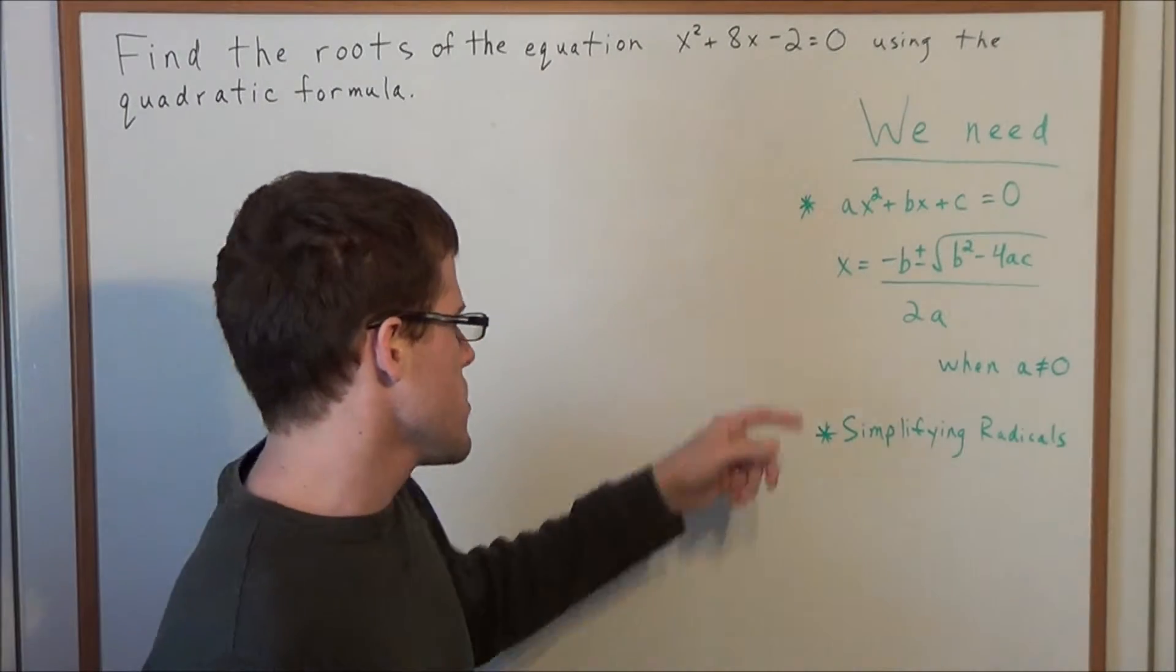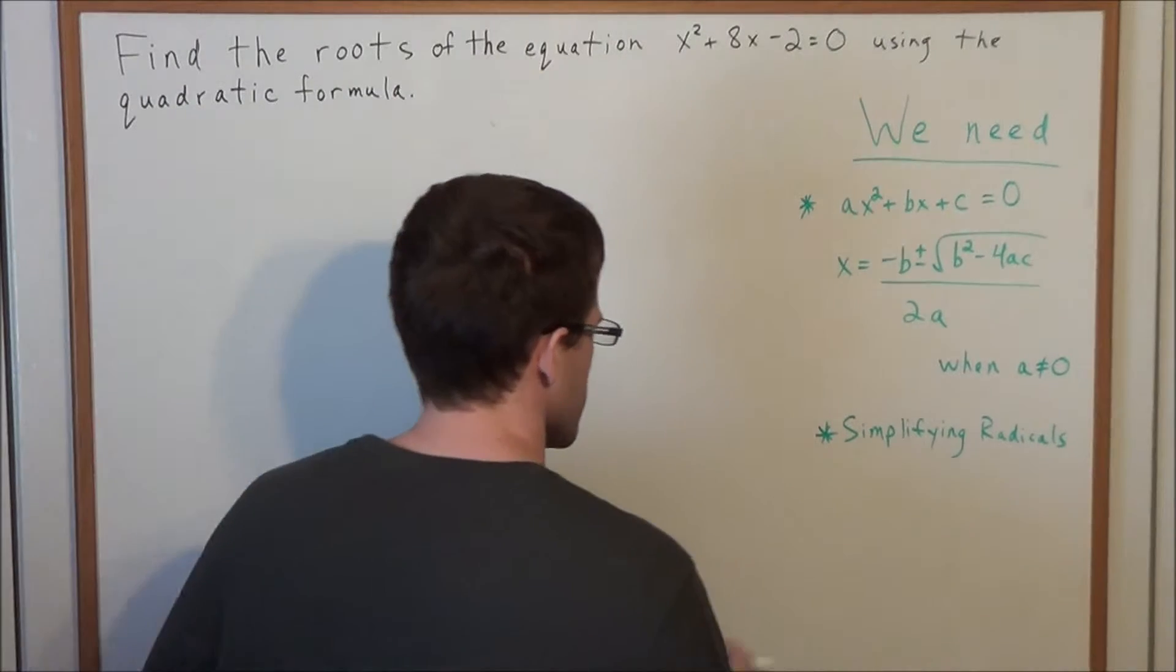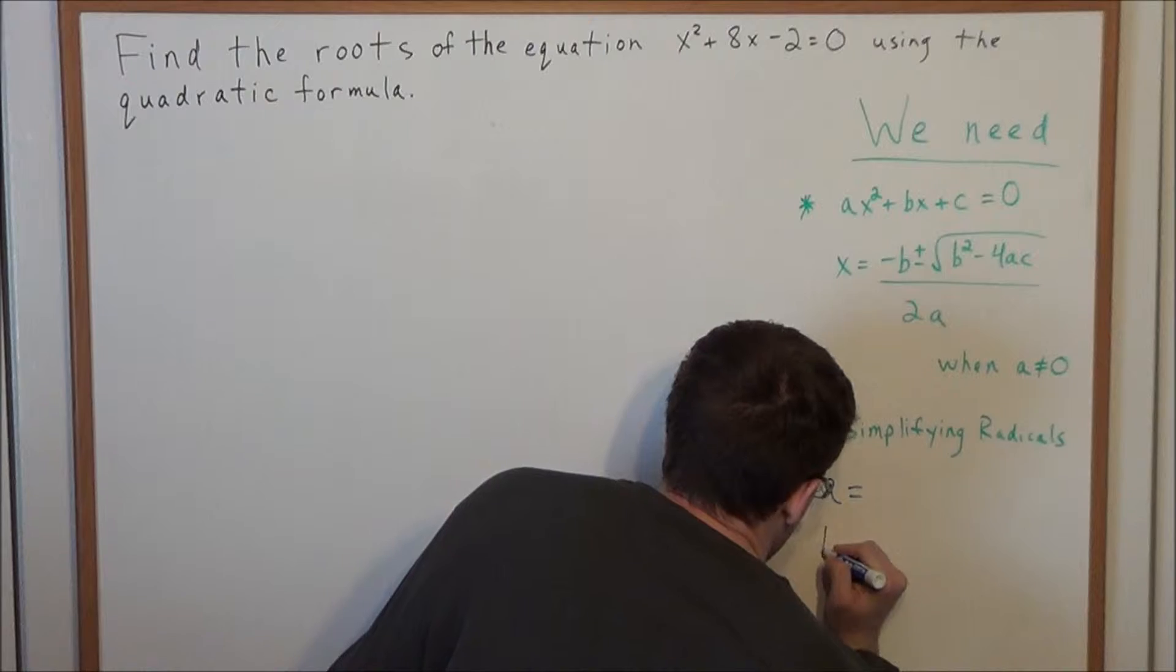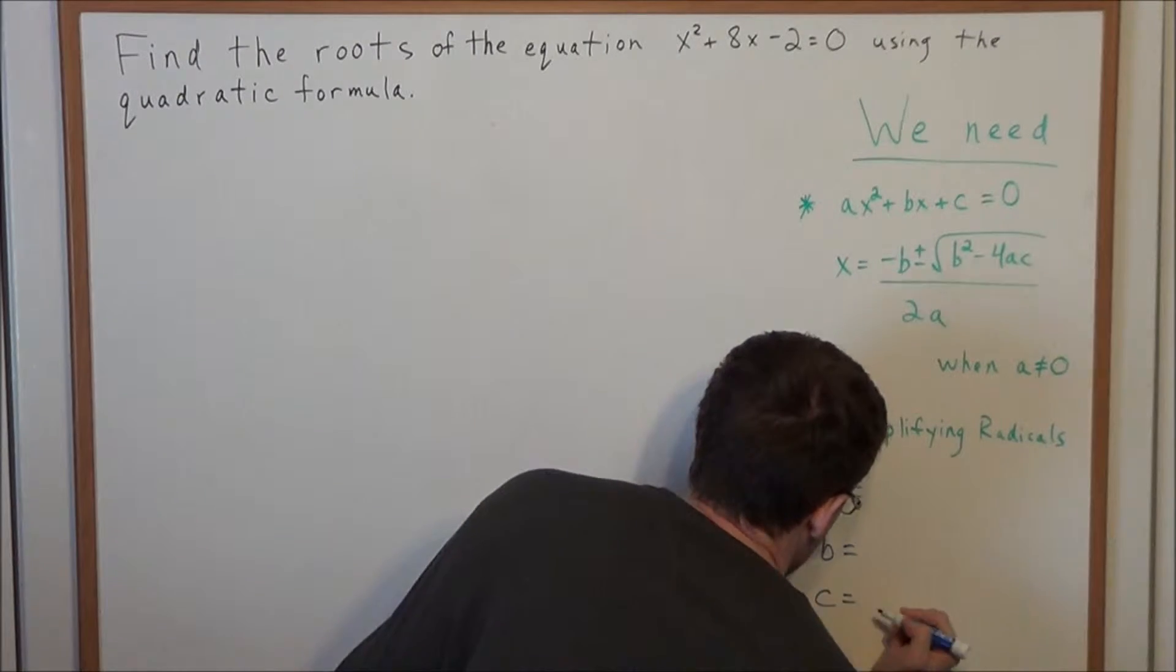Now this equation is really complicated, so if you're first learning this I advise making a table on the side with your a, b, and c values.